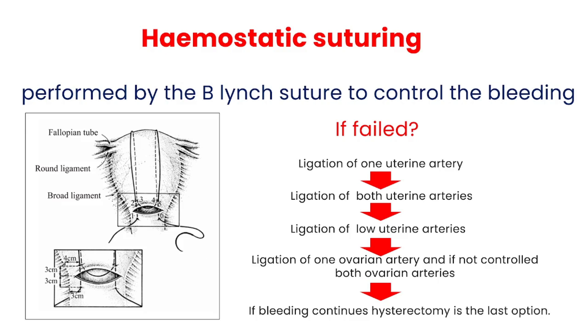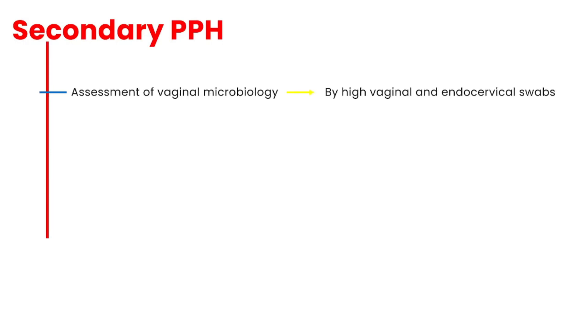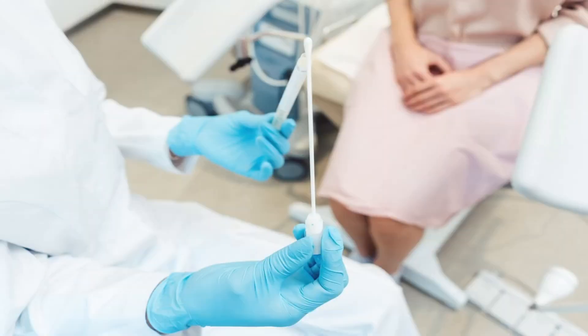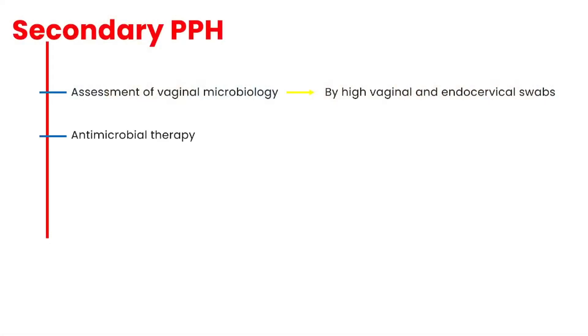If bleeding continues despite all the above measures, hysterectomy is the last option. In women presenting with secondary PPH, an assessment of vaginal microbiology should be performed using high vaginal and endocervical swabs, and appropriate antimicrobial therapy should be initiated when endometritis is suspected.